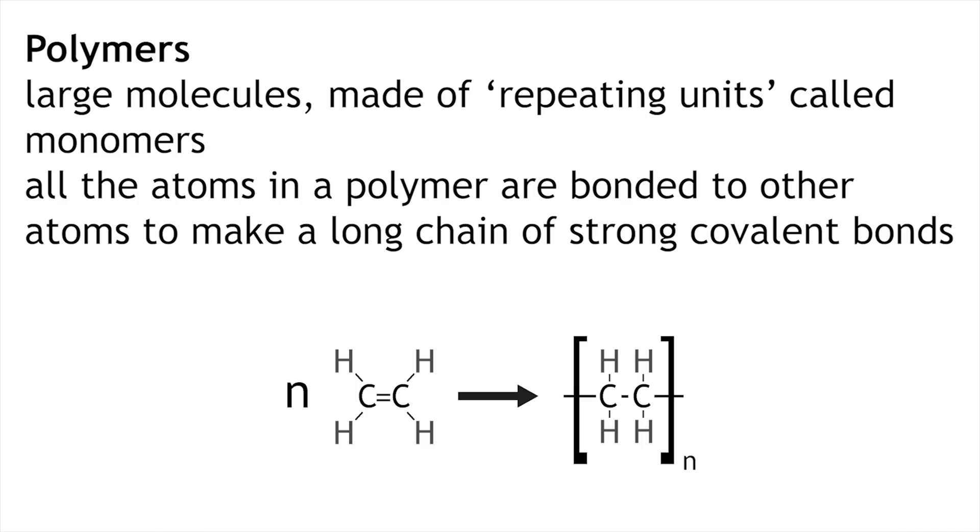The last type of giant covalent structure that you need to be aware of is polymers. Polymers are made up of long chains of atoms, normally with a carbon backbone. We'll learn more about polymers in later videos.